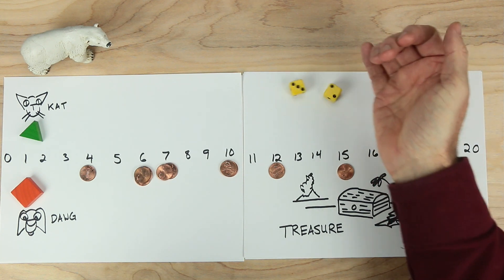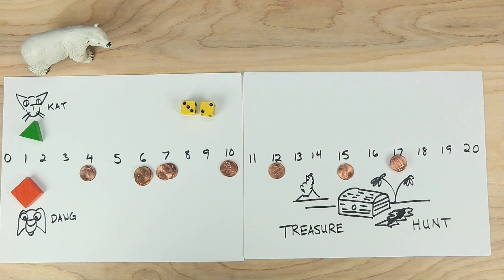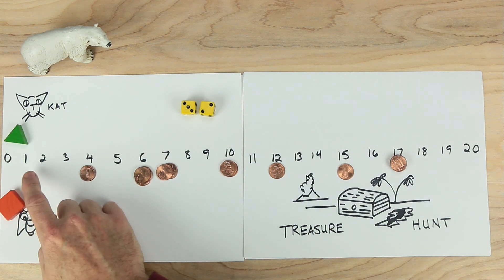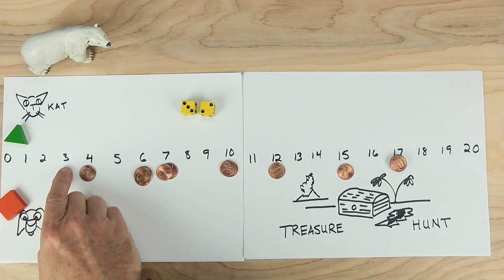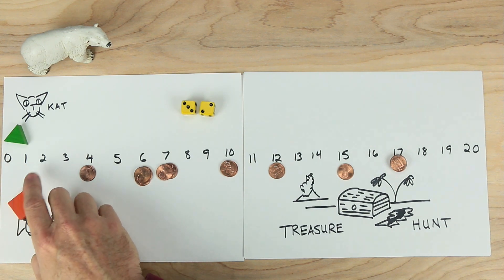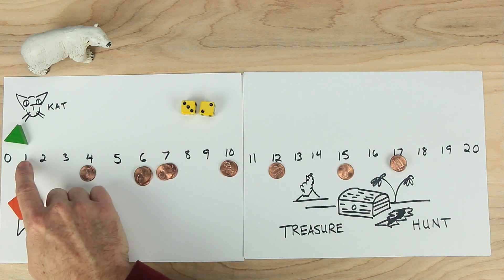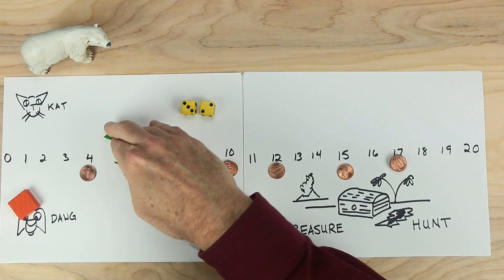Cat's going to start. Cat rolls a three and a two. Cat could move three forward and then two back. So one, two, three, one, two, and get back to one. That doesn't help much, right? Cat can't go two forward and then three back because cat will go off the board. Cat decides to go forward three and two more. One, two, three, and two more. One, two. Cat is now at the number five.